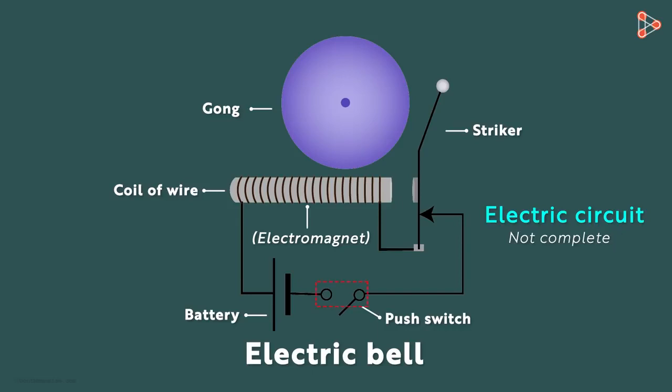When we push the button, the circuit gets completed and the current flows from the positive to the negative terminal. But when the current flows through the coil, it becomes an electromagnet.